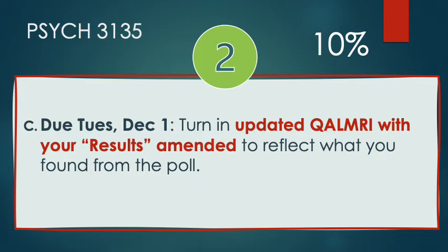In the last section of the midterm, collectively these three parts — A, B, and C — are worth 10% of your grade. The last part is due on December 1st, and that will be turning in an updated QOMRI with your results section amended to reflect what you found in that poll. This means you'll run super simple descriptive statistics on your results, like reporting the frequency and making a chart of that. We're going to have a step-by-step video available on YouTube that will help you do this if you're not familiar.